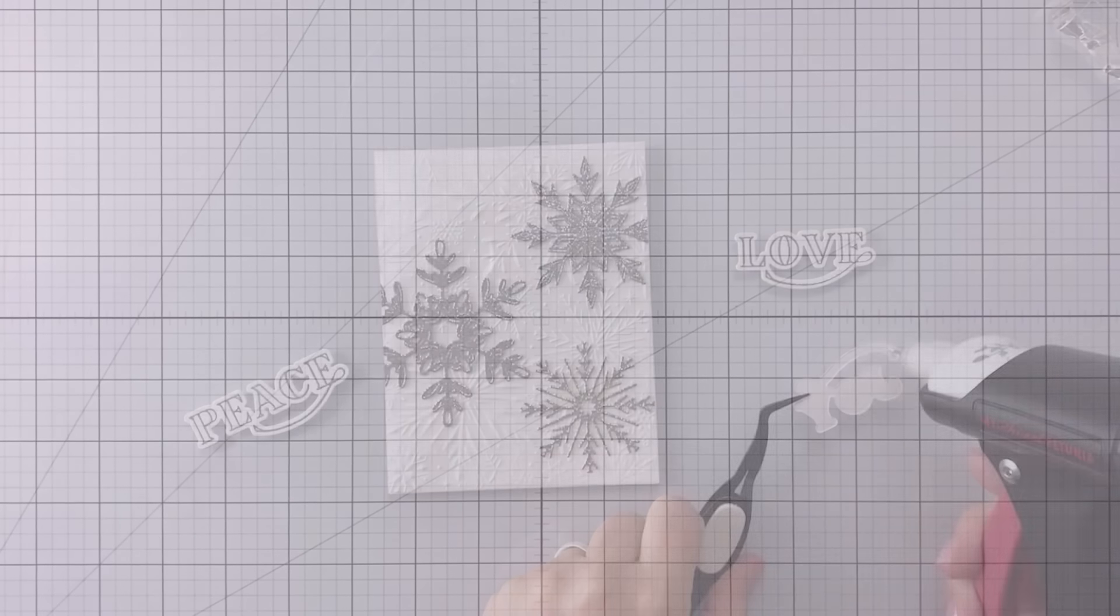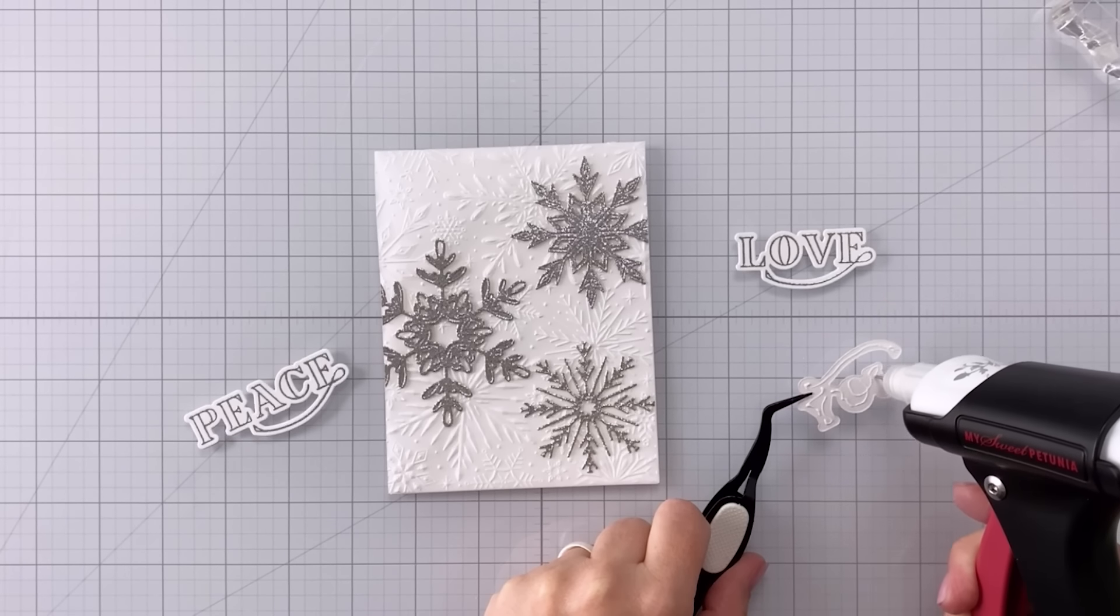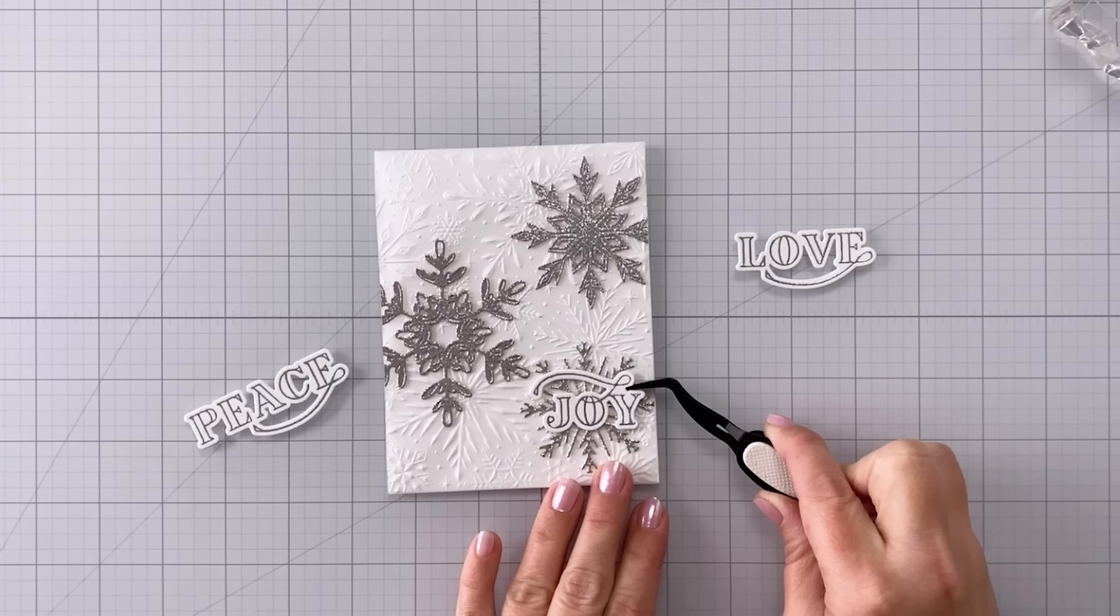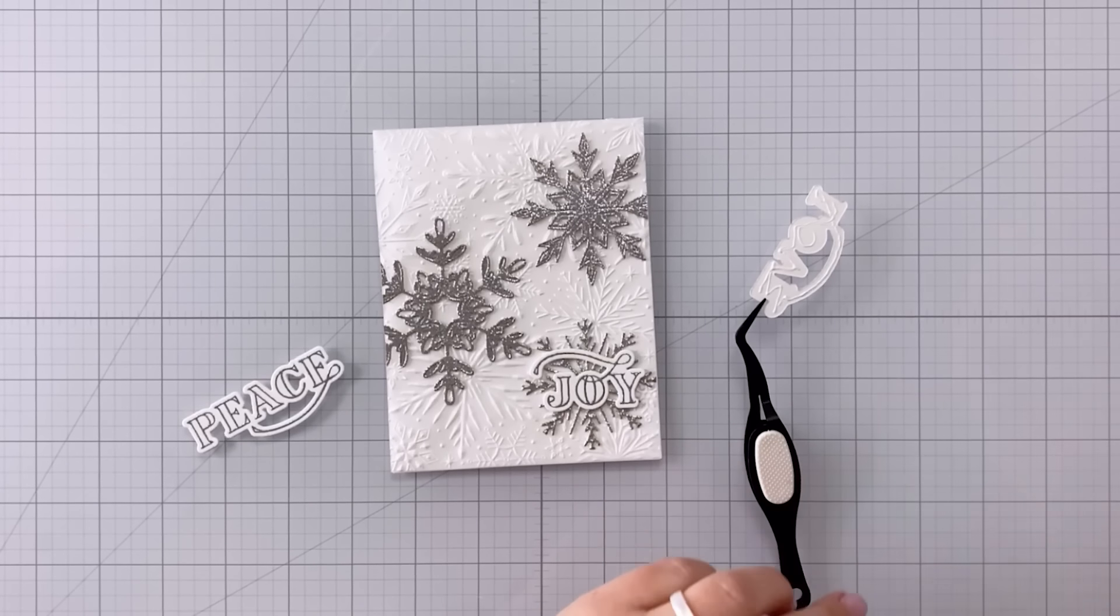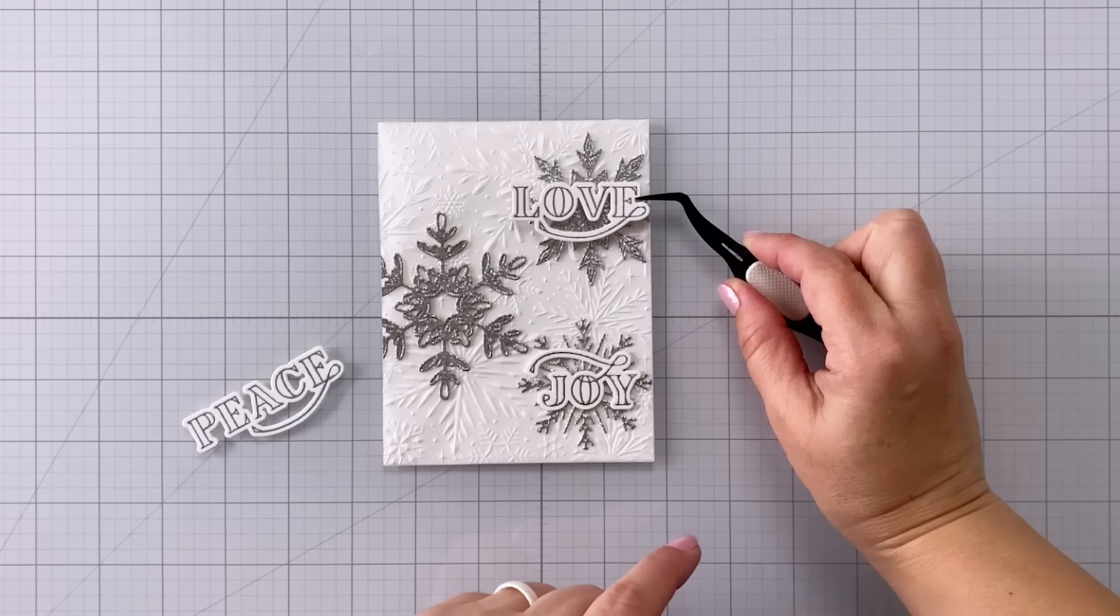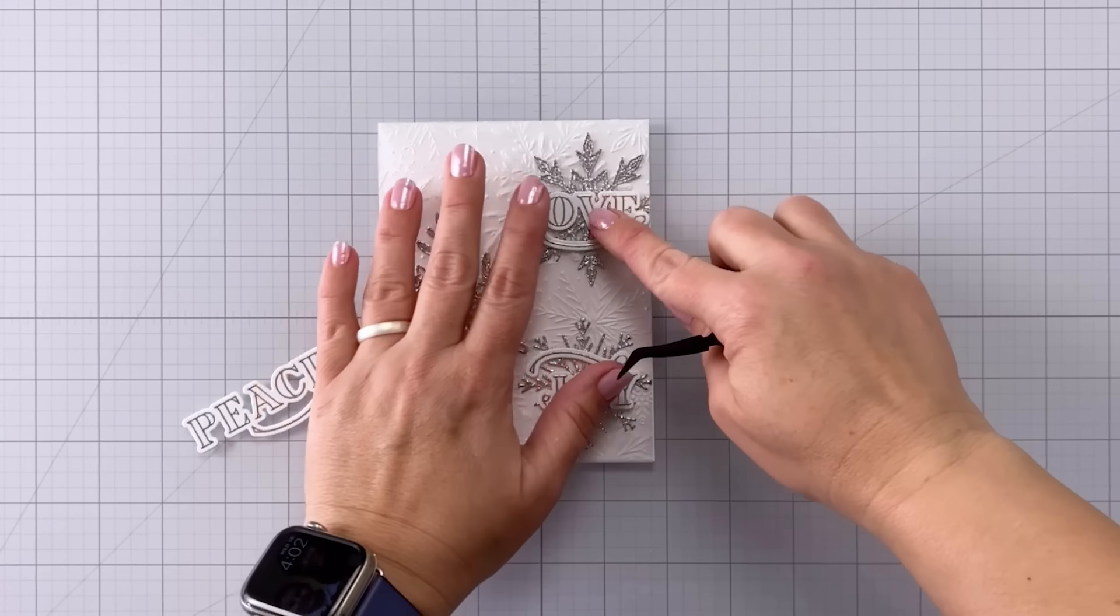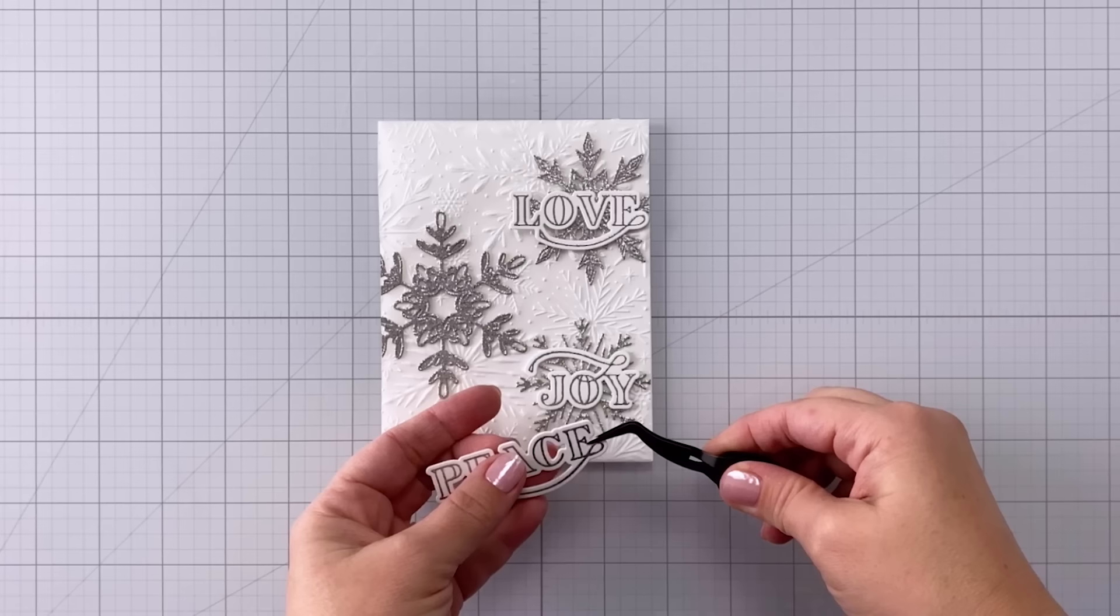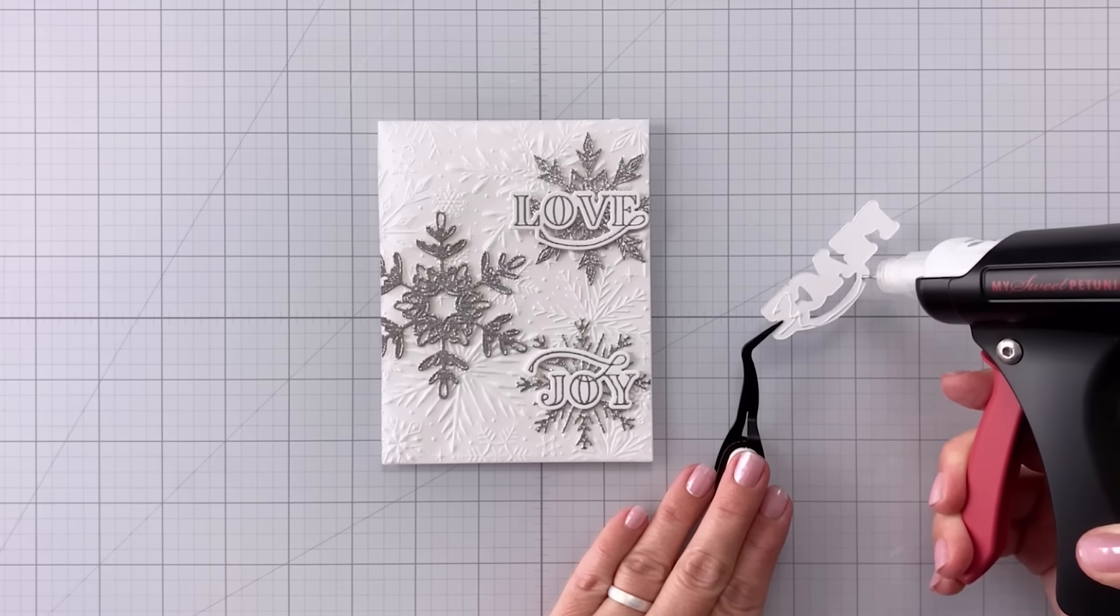Now I've used the coordinating dies and cut those out and off camera I did cut out two extra die cuts of each of these and glued them all together with the heat embossed piece. That's just going to give them a little bit of dimension on the front of the card because they're going to be raised more. You also could use foam tape or foam squares to get the same result but I find it's just quicker and easier when you're working with these very detailed sentiments to go ahead and glue a couple extra die cuts on the back. So again with the liquid adhesive I know that's a theme here but I just find that it makes everything stick together and stay more permanent.